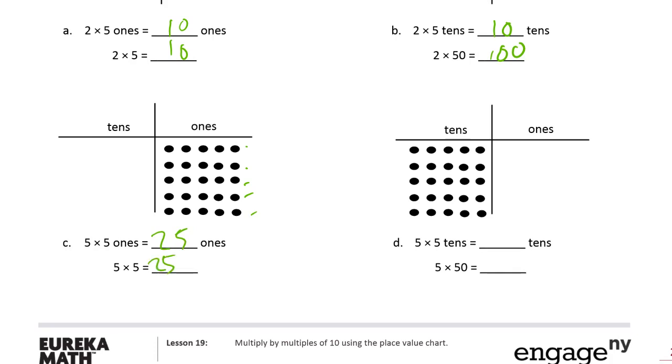Now if these are tens, you still have twenty-five of them, but they're tens. And if these are all fifties, because each row, each one of these is a ten, and each group of five is five tens, it's fifty. Ten, twenty, thirty, forty, fifty.